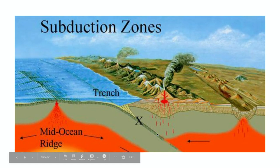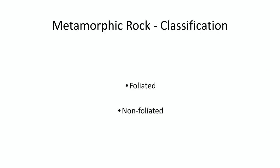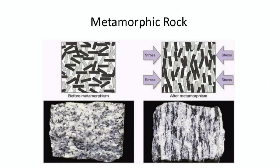As this gets too far deep, it will actually liquefy and then it can only become igneous rock after that. So of course we need to classify metamorphic rock, and there are two main groups: foliated and non-foliated.